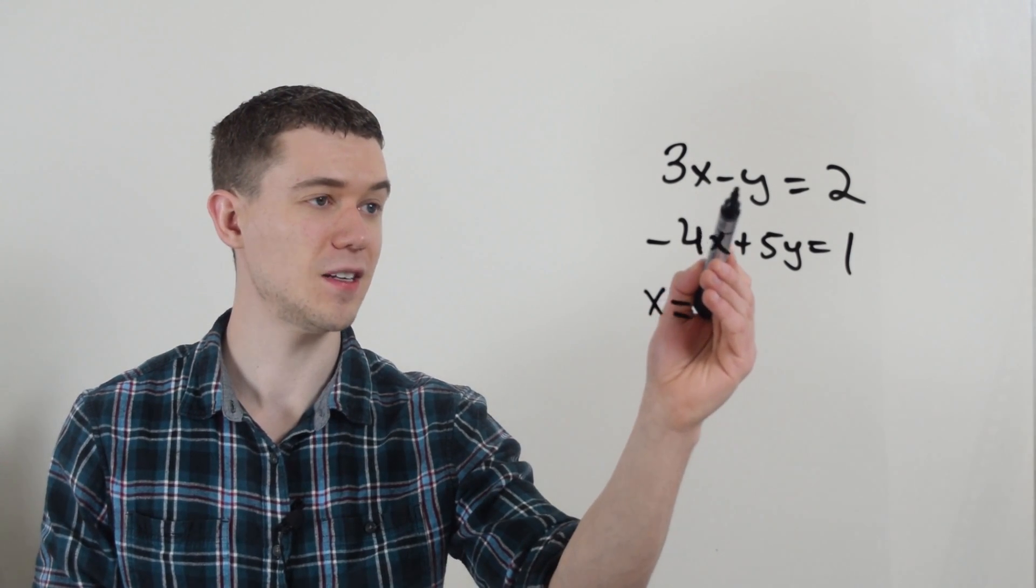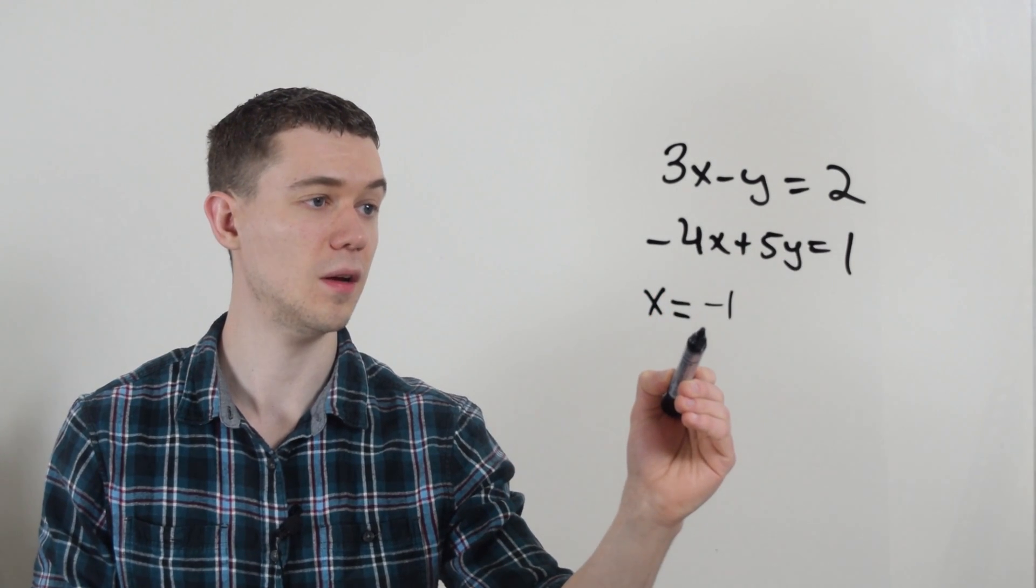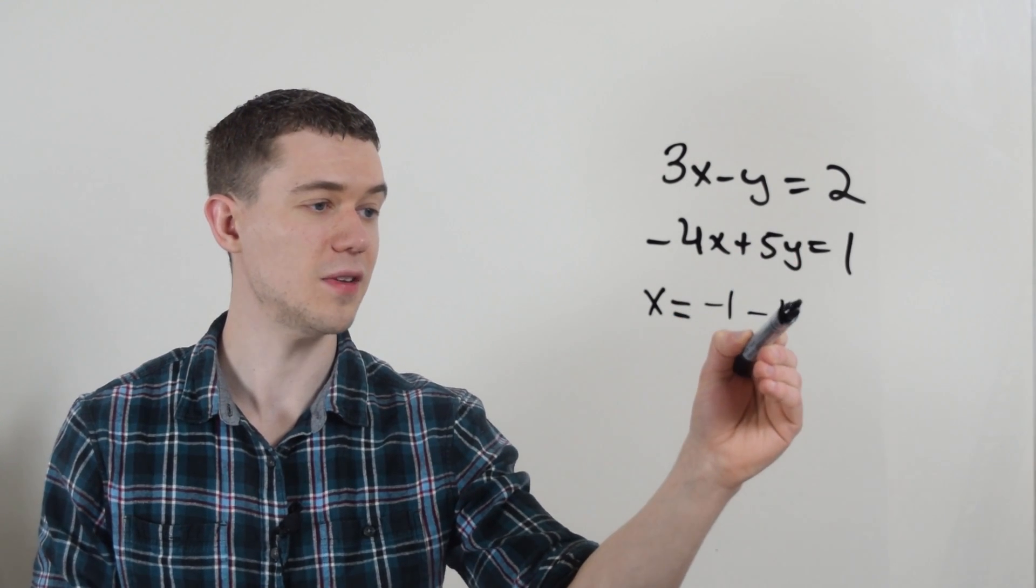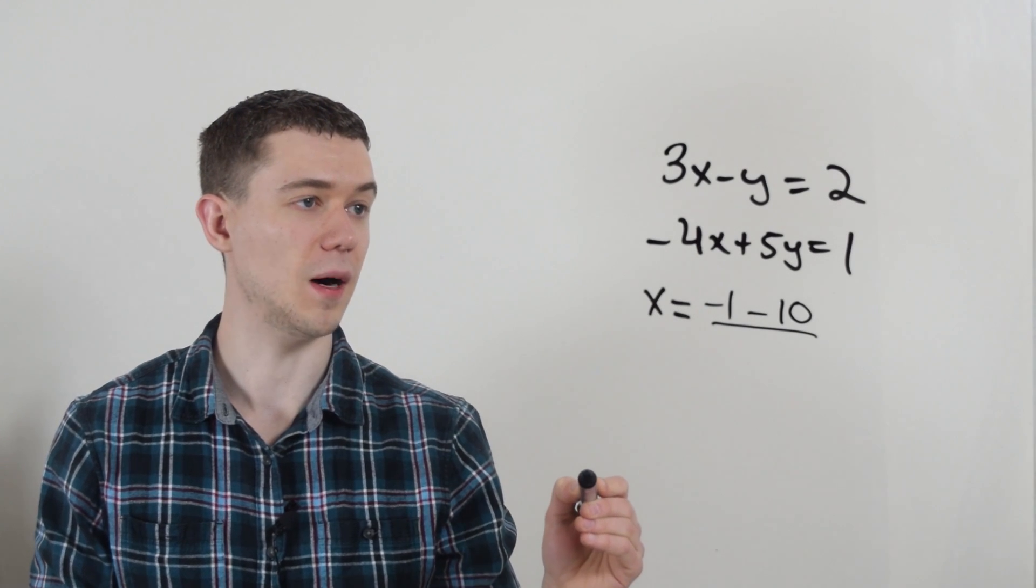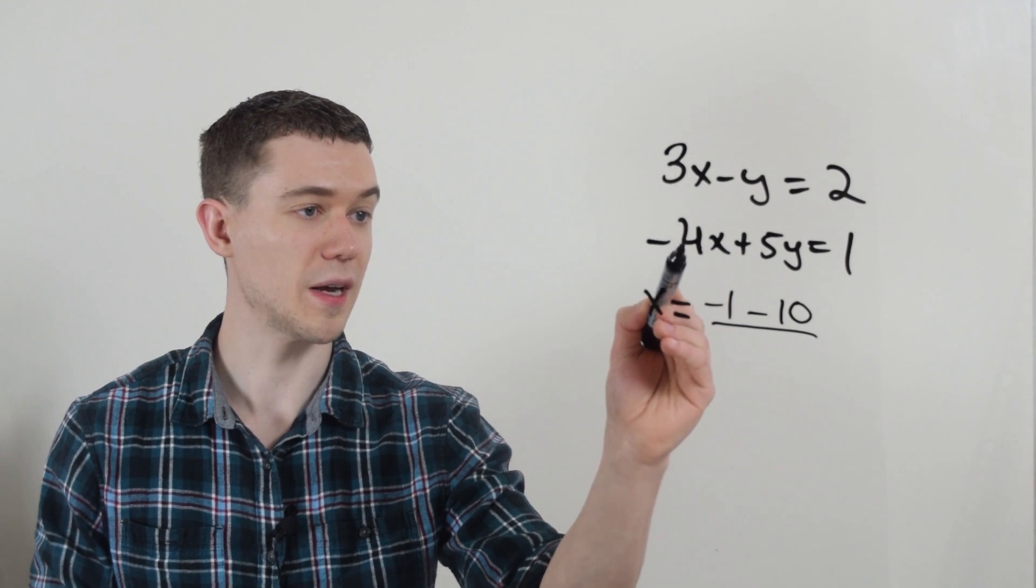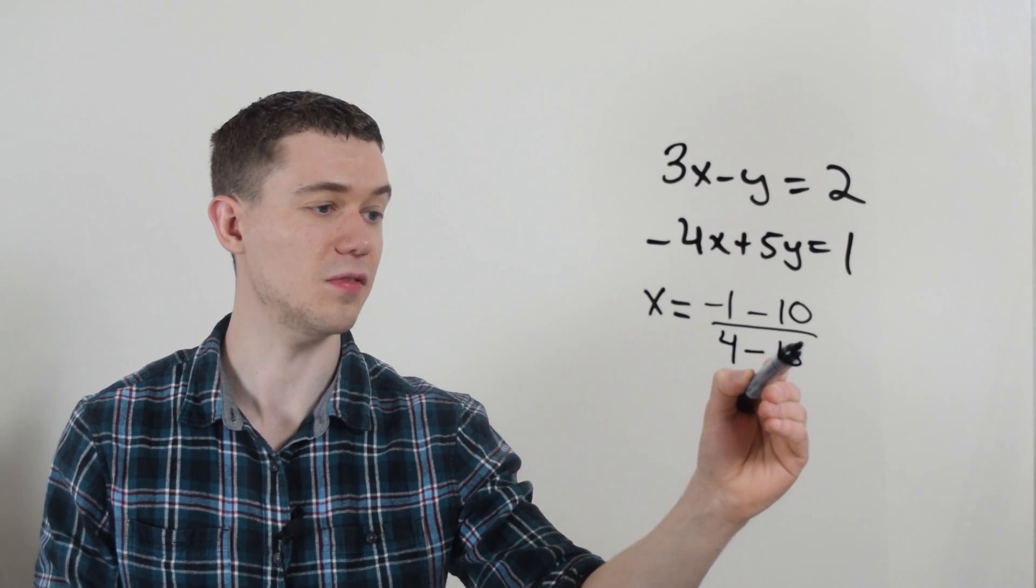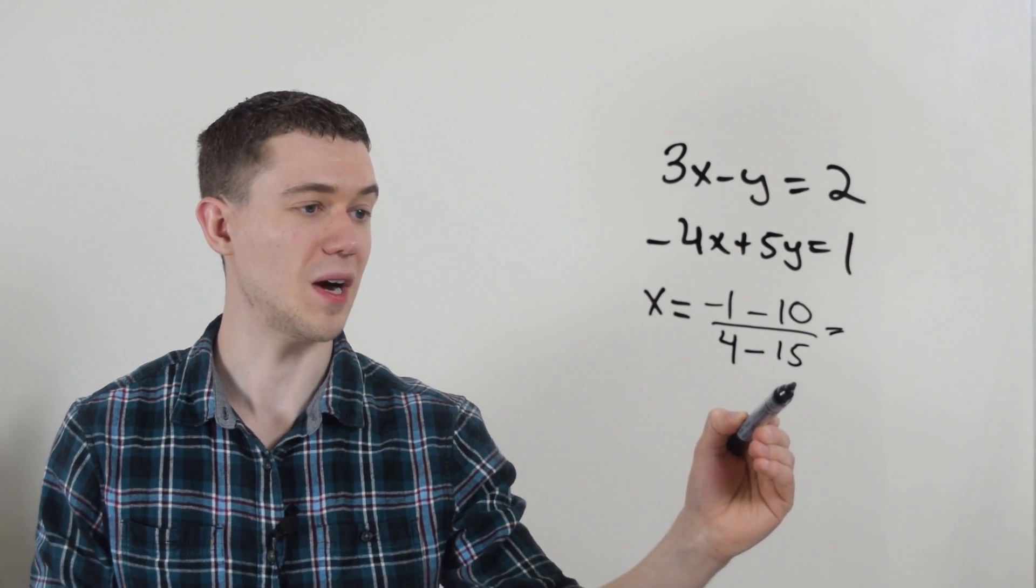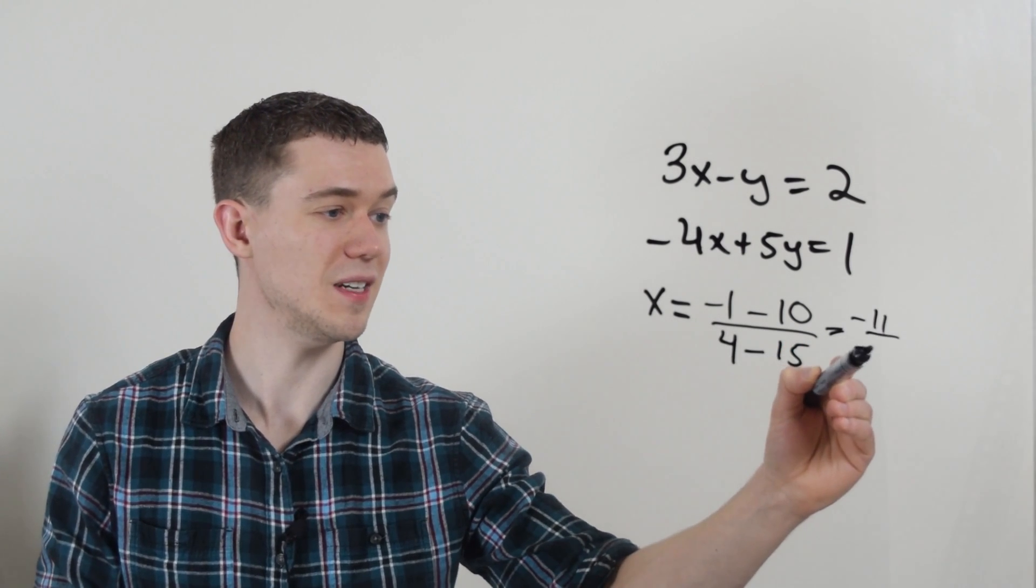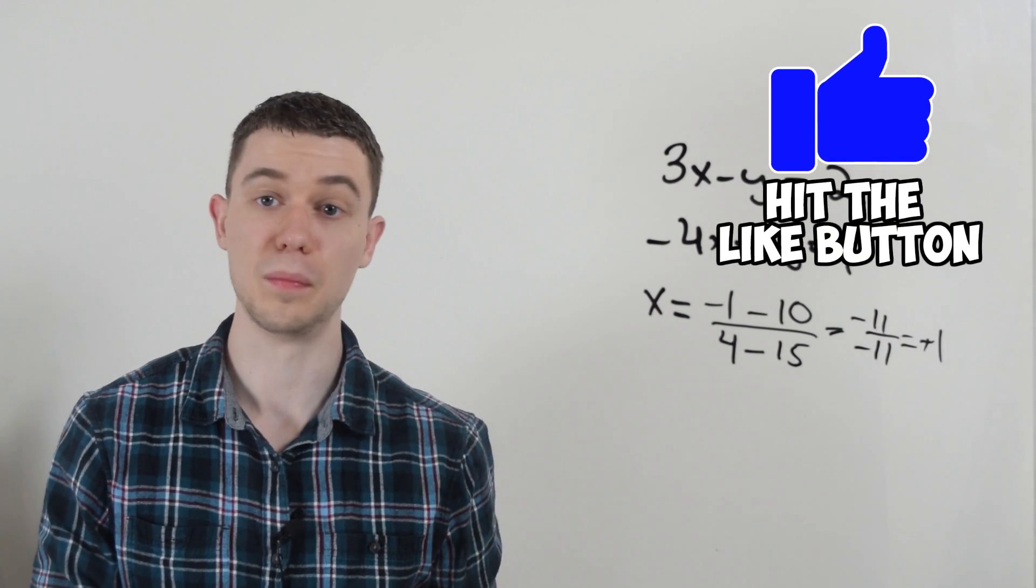We do minus 1, so we do the coefficient of y here. Minus 1 times 1 is minus 1. Minus 2 times 5 is 10. Divided by, and this time we go the diagonals the other way. Minus 1 times minus 4 is 4. Minus 3 times 5 is 15. If you simplify this, minus 1 minus 10 is minus 11. Minus 4, I'm sorry, 4 minus 15 is minus 11. Something over itself is positive 1.